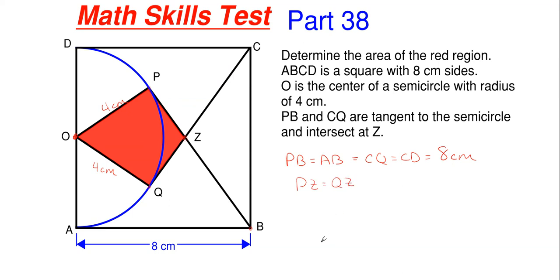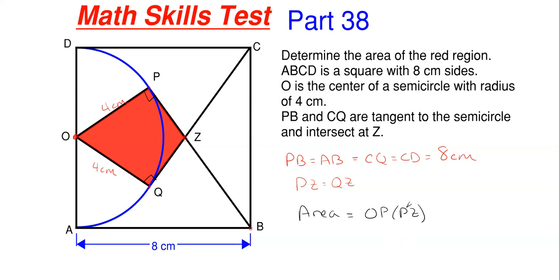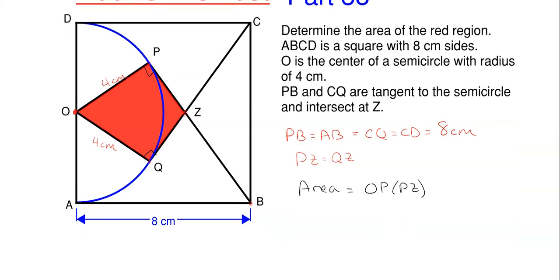We don't know what those lengths are, so we have to find them. How do we determine the area of this kite region? Anytime you have a kite shape that has two right angles in it — and this will have right angles since we have tangency at those points — with two sides equal accompanied by another two equal sides, the area of this kite is quite easy. Since OP equals OQ and PZ equals QZ, the area of the kite just becomes OP times PZ. We know OP is four centimeters, so we need to determine PZ.